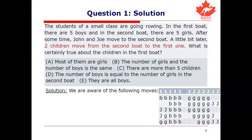We are asked what is certainly true about the children in the first boat, regardless of which of the three scenarios we're in. Is it that most of them are girls? No — it could be that we have five boys and no girls, or four boys, or three boys. Is it that the number of girls and number of boys is the same? Unlikely for a boat with five people in it — not true. Is it that there are more than five children in the boat? Nope. Two moved back, two moved forward, still five in total.